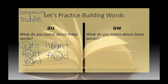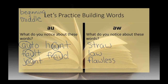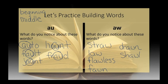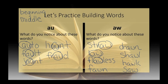With AW it's going to look a little different. We have words like straw, law, flawless, fawn, drawn, shawl, hawk, and saw. As you look at these, you will notice that not all of them are at the end. A good many either fall at the end or close to the end of the syllable. Some are right in the middle of the word, like fawn, drawn, shawl, and hawk.